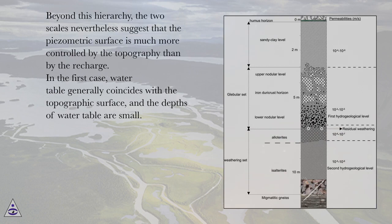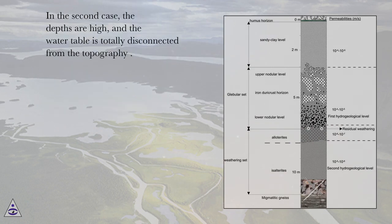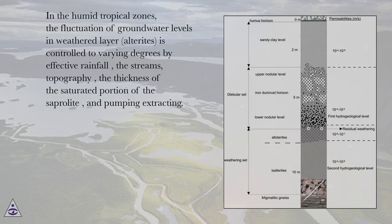In the first case, the water table generally coincides with the topographic surface and the depths of the water table are small. In the second case, the depths are high and the water table is totally disconnected from the topography. In humid tropical zones, the fluctuation of groundwater levels in the weathered layer, or alterites, is controlled to varying degrees by effective rainfall, streams, topography, the thickness of the saturated portion of the saprolite, and pumping or extraction.